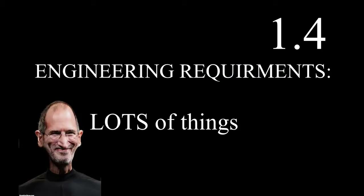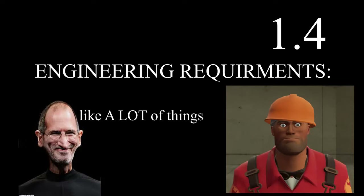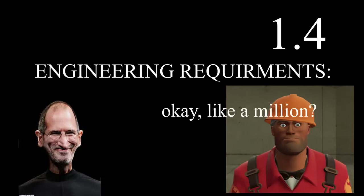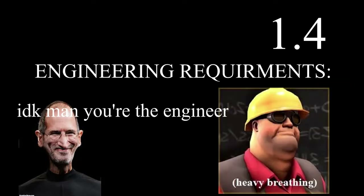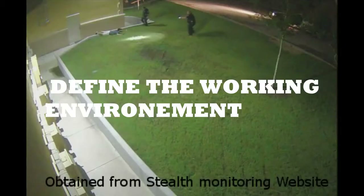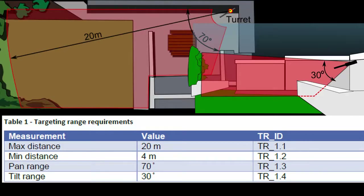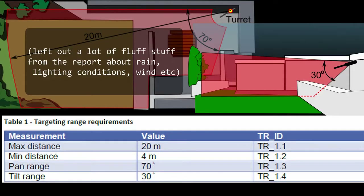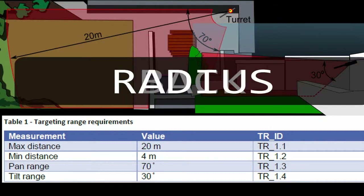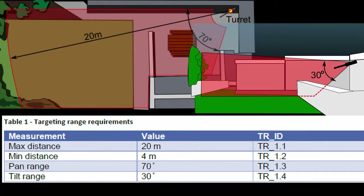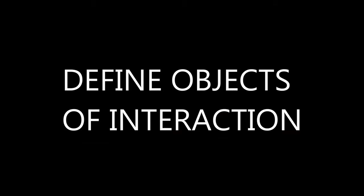Then we get to the fun stuff: engineering requirements. This is translating everything the client told you into numbers you can actually work with. The environment the system will find itself in — a typical backyard — has a maximum outward radius of about 20 meters, a minimum distance of 4 meters, a span range of 70 degrees, and a tilt range of 30 degrees.